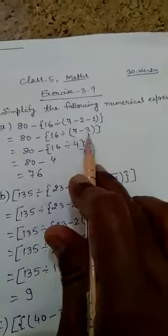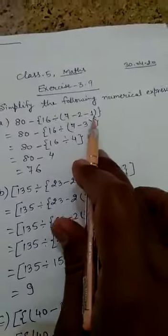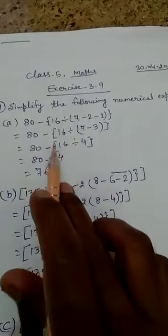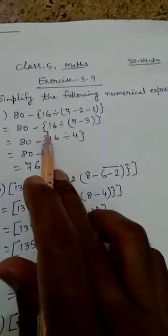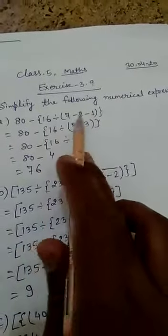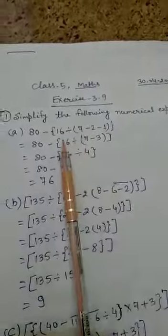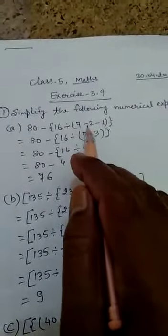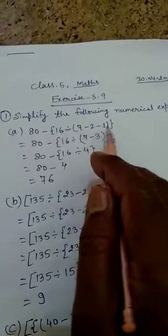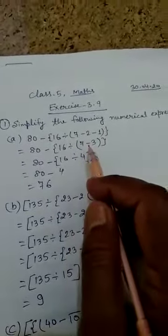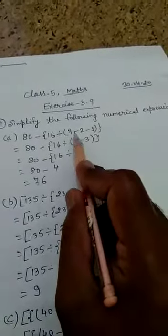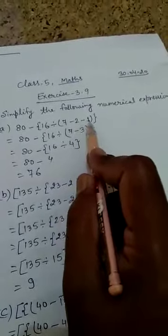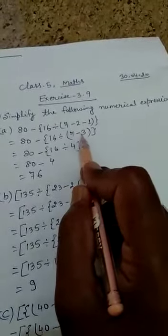First of all we will remove the small brackets. In the small brackets, we have minus 2 minus 1. When two negative numbers are given, you add the numbers and put the negative sign. So 2 plus 1 equals 3, meaning minus 2 minus 1 becomes minus 3. In the next step, you write 7 minus 3.